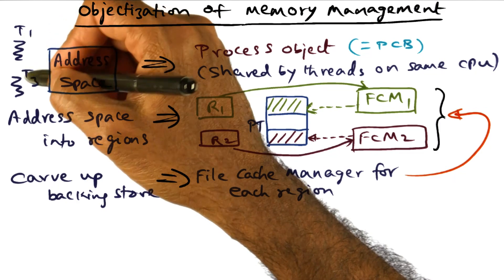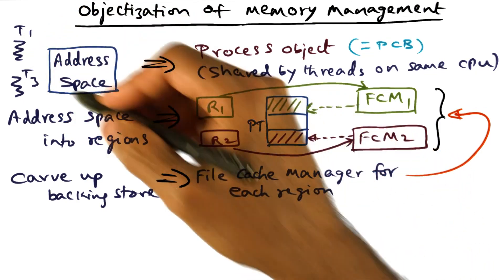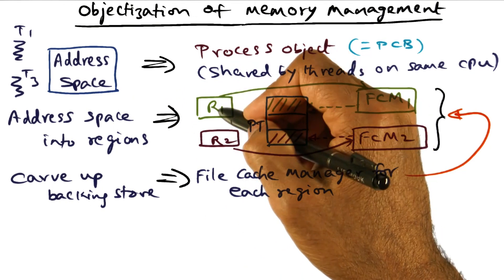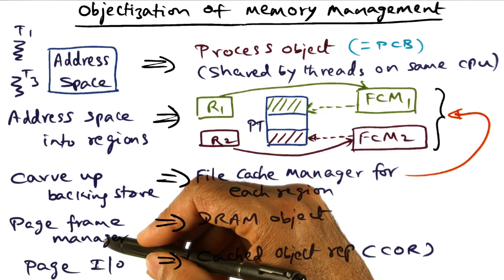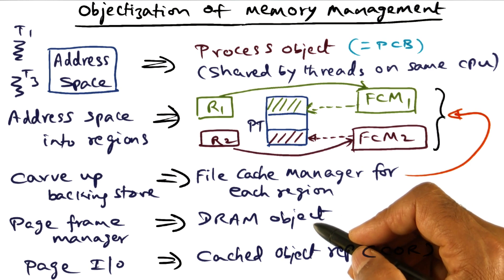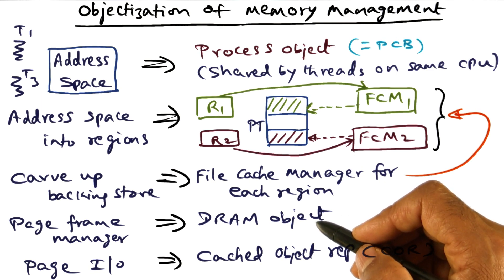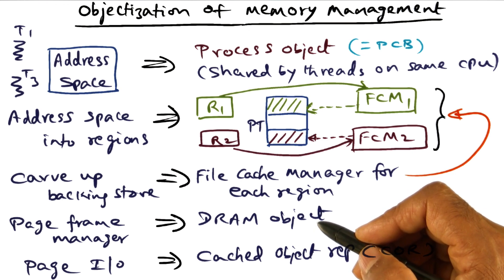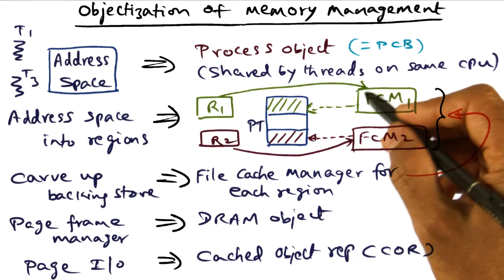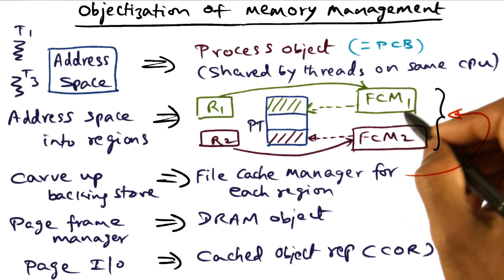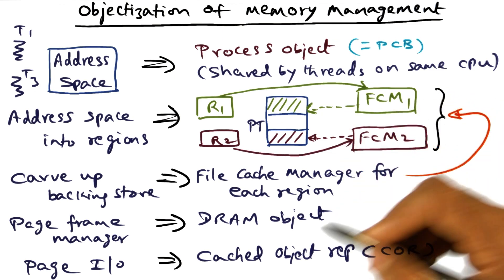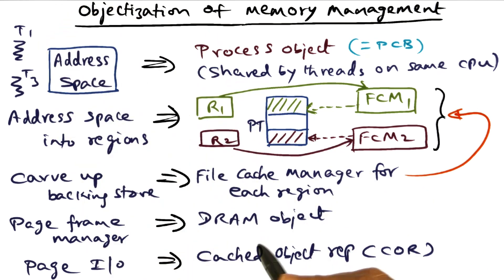For any of these threads to do work, the regions they're executing in have to be in physical memory so they can actually get to the instructions and data corresponding to that portion of the address space. Therefore, we need a page frame manager. The page frame manager is also going to be implemented as an object — a DRAM object. This DRAM object is the one that serves page frames. When the page fault service needs to get a page frame, it contacts the DRAM object to get a physical page frame, so it can then move the contents of the backing store into DRAM for future use by a particular thread.